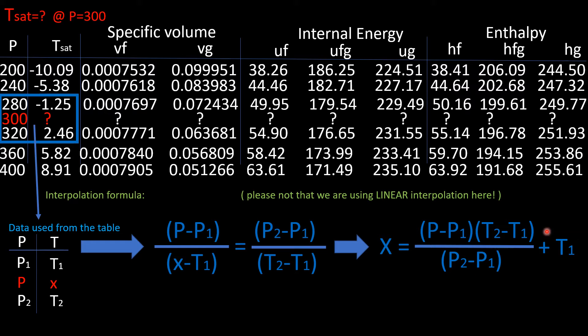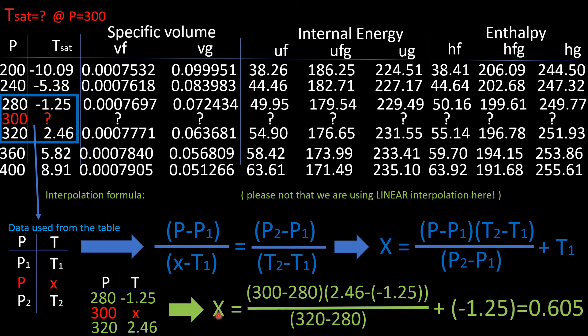The X is my unknown. This is the formula that we set up and we solve for X, and this is how we get the property that we have missing. Another mini table, this time with the actual values copied out of the table, we can go ahead and plug into X and there you have it. We can find that the T sat at 300 is 0.605.